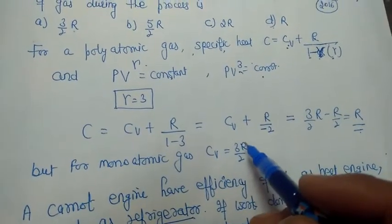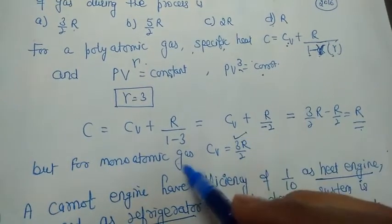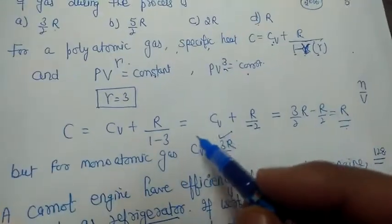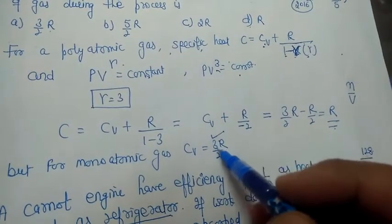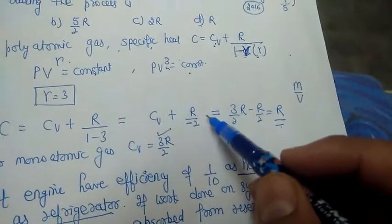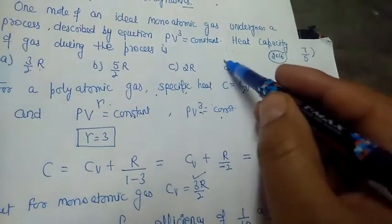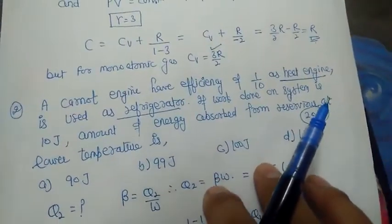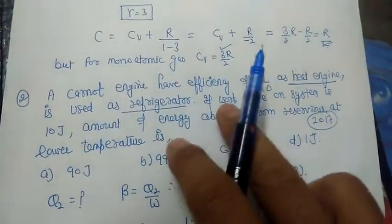The gas is monoatomic, so Cv = 3/2 R, since there are 3 degrees of freedom for a monoatomic gas. Substituting Cv = 3/2 R and n = 3 into the formula, the total specific heat C = R. So the correct option is the fourth option, R.